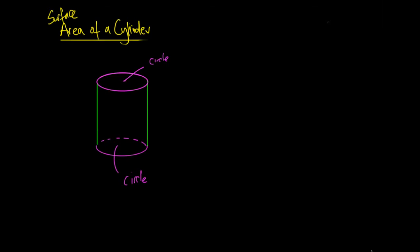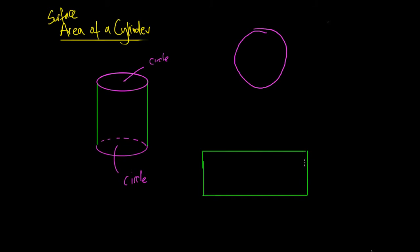In order to work out the total surface area we want to work out what the total area of these flattened out shapes would be. We'll separate it out into a circle and a rectangle. For this example, the radius of the cylinder is going to be three centimeters and the height is going to be five centimeters. All we need is a radius and a height and then we can work out everything.